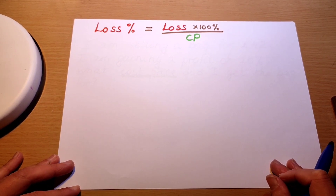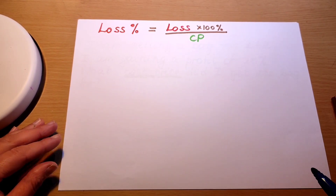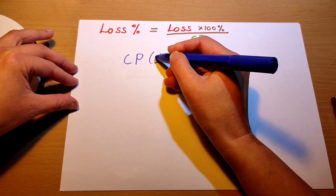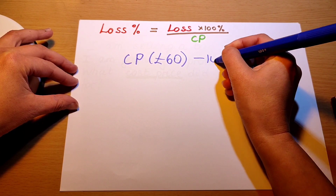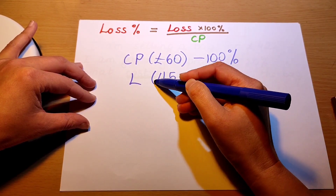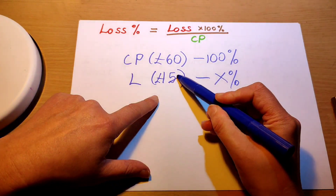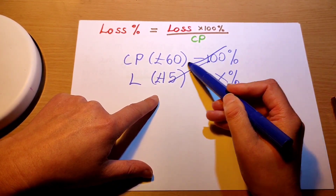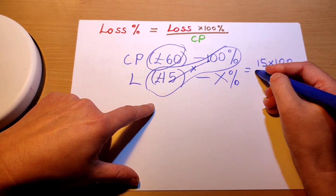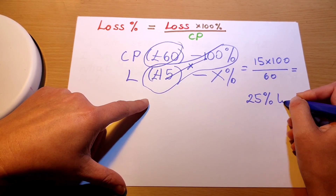If I incurred a loss instead of a profit, my loss percentage is worked out in a similar way — you can use this formula or the cross multiplication and division method. So my cost price was 60 pounds — this was my 100 percent. My loss was 15 pounds, and I'm looking for the loss percentage. I cross multiply numbers diagonally and divide by whatever is left. So exactly the same calculation: 15 times 100 divided by 60, and we worked out that it's 25 percent. So I incurred a 25 percent loss.